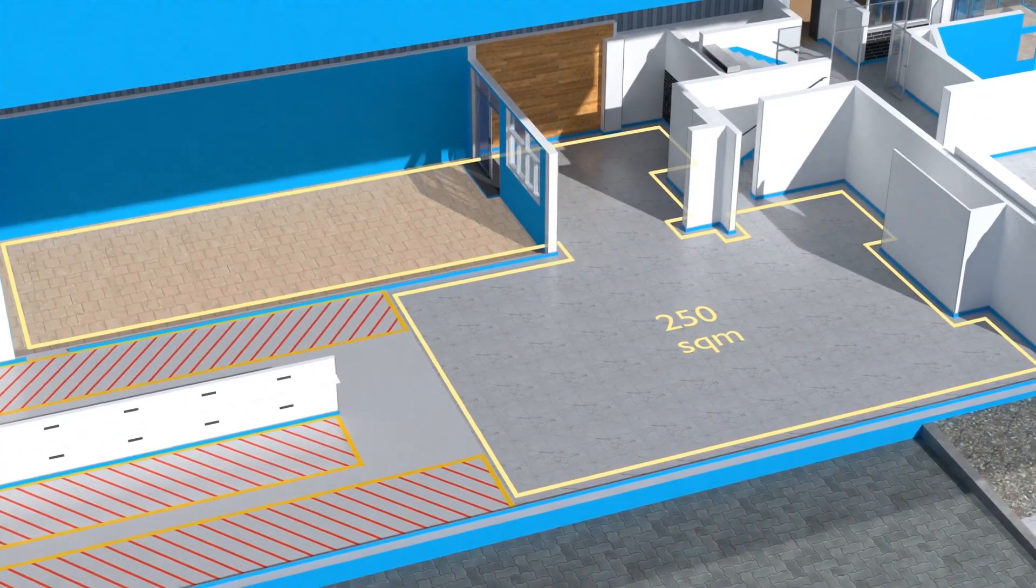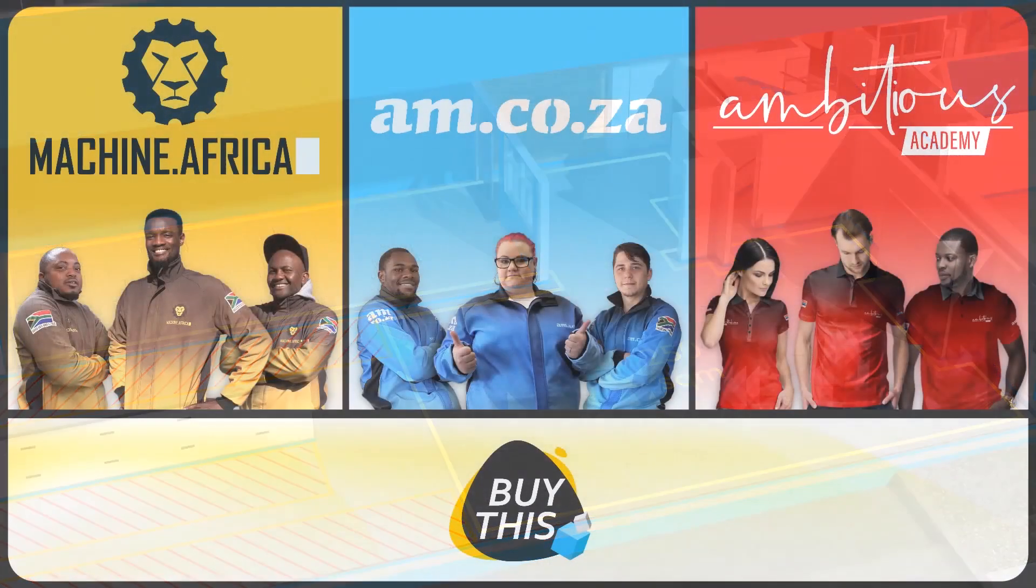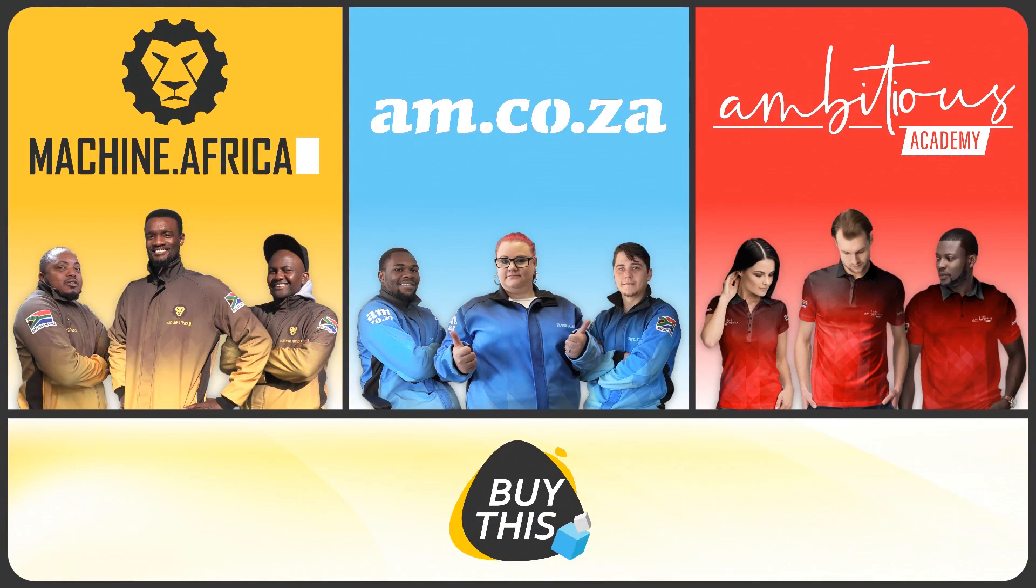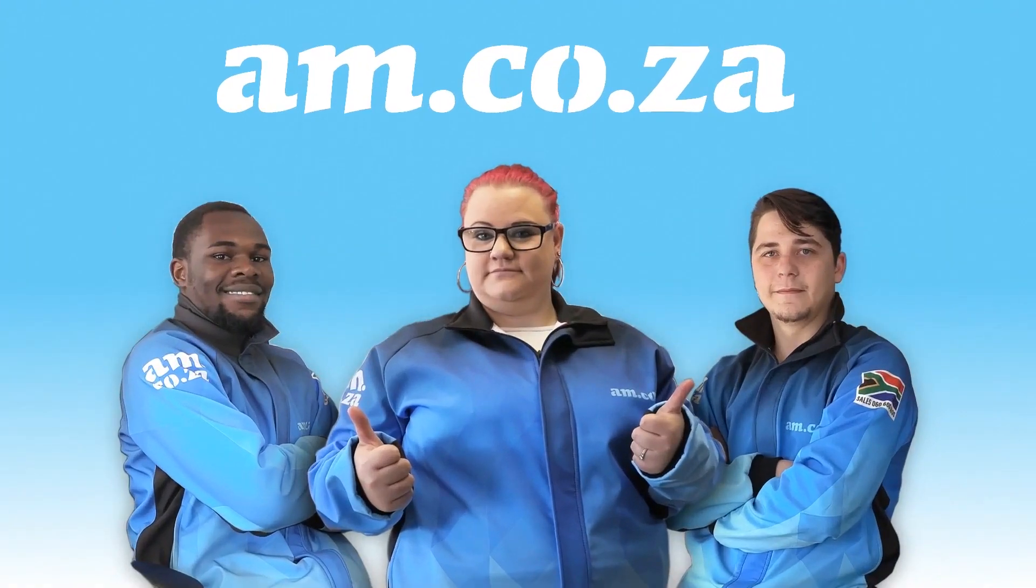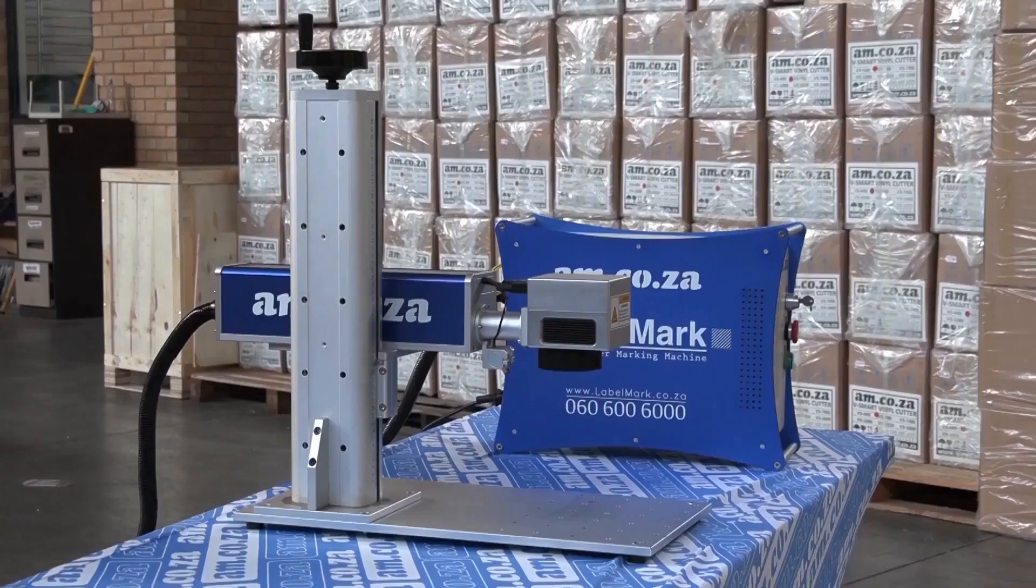And a 250 square meter tea garden and coffee shop for your convenience. Our group now comprises four businesses. am.co.za is our main business and supplies the machines, spare parts and consumables.